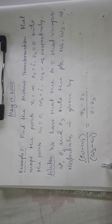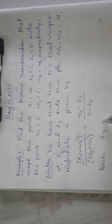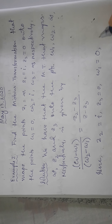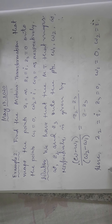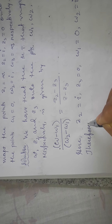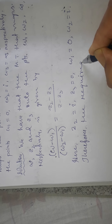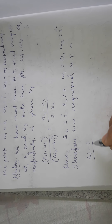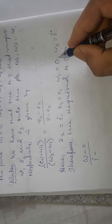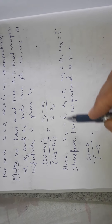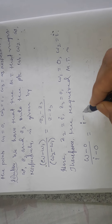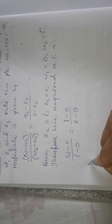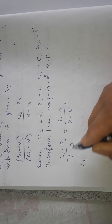In this case, Z₂ = i, Z₃ = 0, W₁ = 0, and W₂ = i. Therefore, the required Möbius transformation is: W minus W₁ (which is 0) over W₂ minus W₁ (i minus 0) equals Z₂ minus Z₃ (i minus 0) over Z minus Z₃ (Z minus 0).